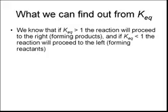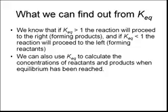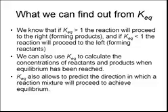What can we find out from Keq? We know that if Keq is greater than one, we have more products than reactants. And if Keq is less than one, the reaction lies to the left and we've got more reactants. We can also use Keq to calculate concentrations of reactants and products when equilibrium has been reached. Keq also allows us to predict the direction a reaction will proceed to achieve equilibrium — and that third point is what we're focusing on today.